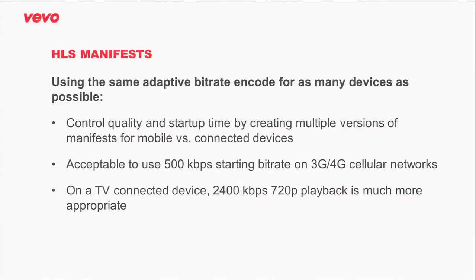Part of that approach is dealing with HLS manifests themselves. Alex showed you the sample HLS manifests generated through Elastic Transcoder. One of the tradeoffs is: do you want to start at a higher bit rate and higher quality versus a slower startup time? There are different scenarios for different devices, but the goal is to use the same video encoding settings while creating many different manifests adapted to different device types. A mobile device versus a large-screen connected device — it's okay to have a 500 kilobit starting bit rate on 3G or cellular, but for a living room experience on 50 or 60-inch LCD screens, you really want to start at a much higher bit rate.